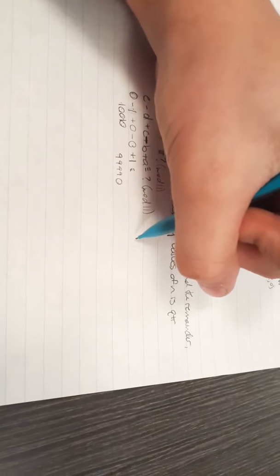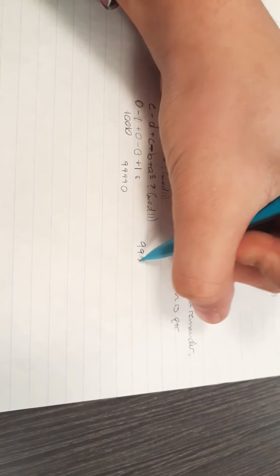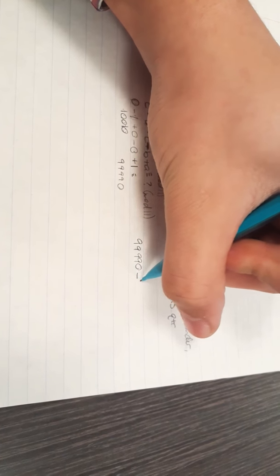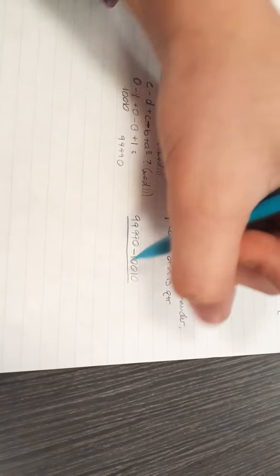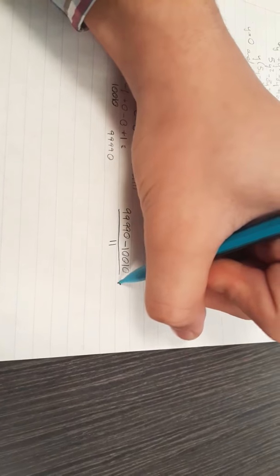So now, to find out how many numbers there are, we're going to do 99990 minus 10010, divided by 11, and then we have to add 1, because that includes the first and the last number.